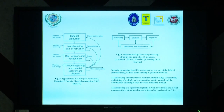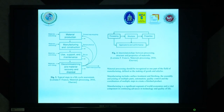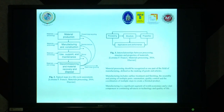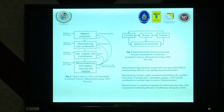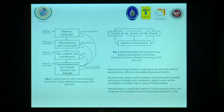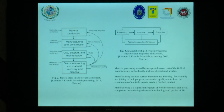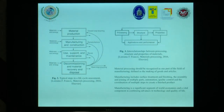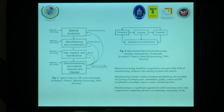Typical steps in life cycle assessment. At the very beginning, we need materials and energy. Nowadays, energy and materials are a big problem. We need material and energy for material production, for manufacturing and construction, use, support, and maintenance. We also need composition, material recovery, and disposal. The results afterwards: we can reuse the material after the last step.